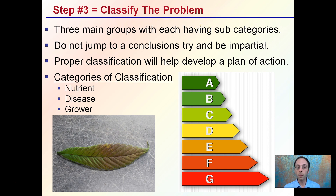Then you want to classify the problem. This involves three main groups, each having subcategories. The key is, again, not to jump to conclusions and try to be impartial. Proper classification will help you develop a plan of action. Those classifications are: is it a nutrient issue — could be a toxicity or a deficiency — a disease, or a grower-implemented kind of problem.